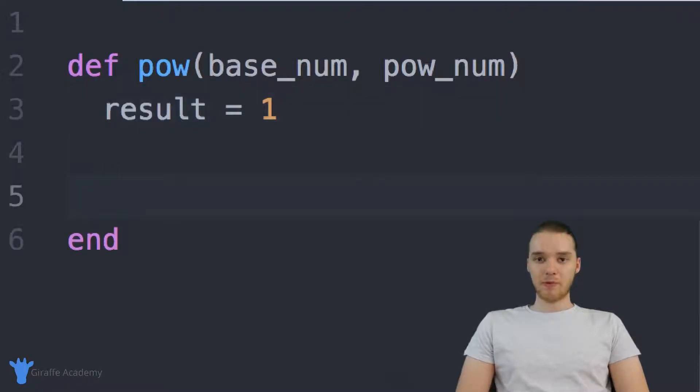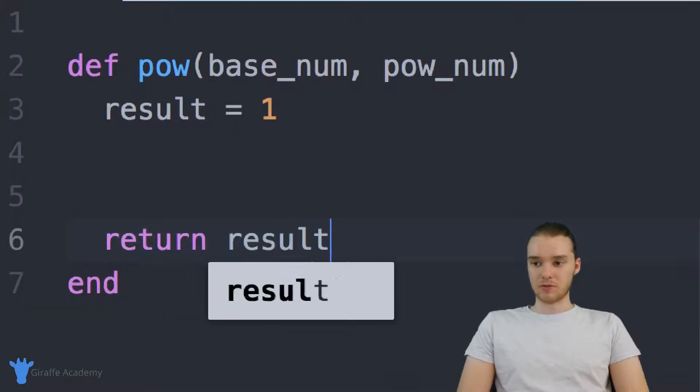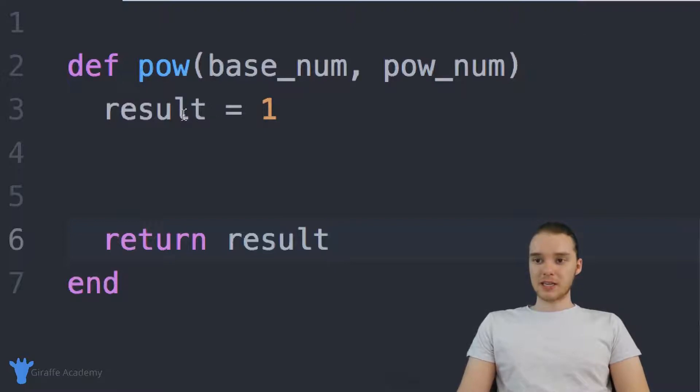And then down here, right before the end of the function, we're just going to return it. So I'll just return the result. So ultimately, this variable result is going to represent the value of the base number taken to the power number. So let's use a for loop. Essentially, what I want to do is I want to multiply the base number by result, pow_num times. That makes sense.